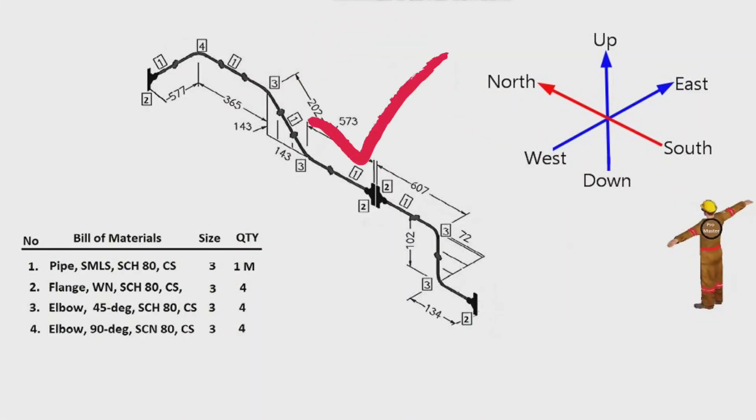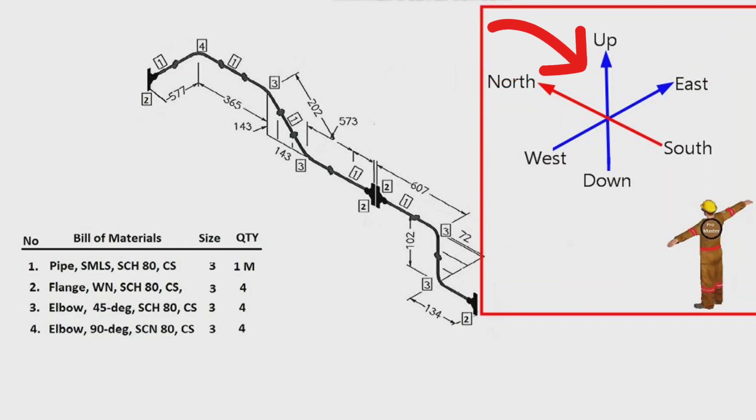In this drawing we see the pipe isometric. First, we will try to read easily this pipe isometric drawing. This scheme you see in the video shows the directions. There are 6 directions here.